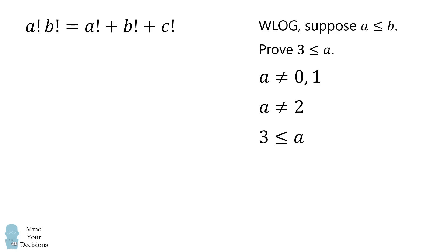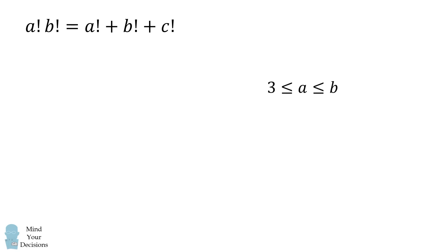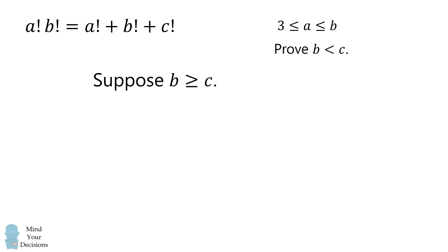This means a has to at least be equal to 3. We've supposed that a is less than or equal to b, so we can add that onto the inequality: 3 ≤ a ≤ b. From here, we are going to prove that b is less than c. To do that, we'll assume the opposite — that b is greater than or equal to c — and then derive a contradiction.